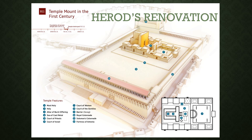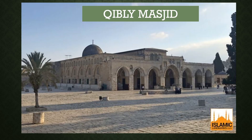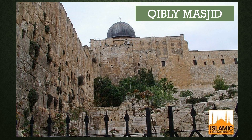There is also an underground masjid called Masjid Marwani. The Qibli Masjid was built by Umar originally and it faces towards the Kaaba. If you look at the picture now, it gives you an appreciation — looking at the walls that Herod built — of how high up Masjid al-Aqsa actually is.